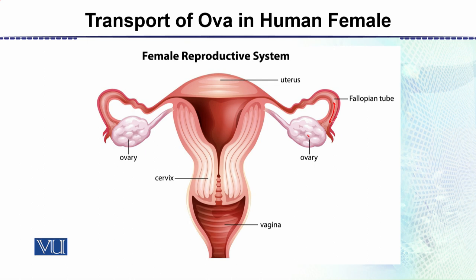This is the point where the ovum is released — ovulation کا process — یعنی Graafian follicle میں سے ovum نکلا ہے۔ یہ fimbria ہیں جو اس کو پکڑتے ہیں۔ This is the point where fertilization occurs، اور sperms جو ہیں وہ پوری اس root سے transport ہو کر آتے ہیں اور egg بھی وہاں موجود ہوتا ہے — infundibulum کے حصے میں fertilization occur ہو جاتا ہے۔